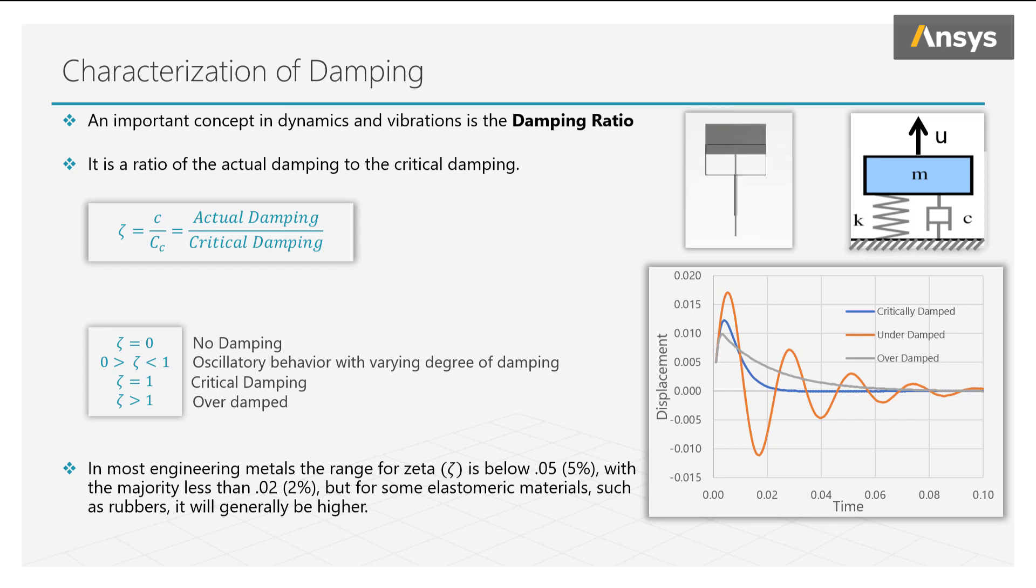The critical damping is the damping that is required for the system response to change from oscillatory to non-oscillatory. To illustrate this concept, let's take a simple spring mass damper system, pull on the mass and let go.